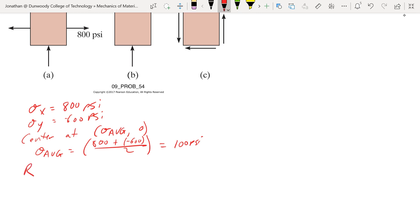R is going to be our radius. In this scenario, it's going to be the distance from either of these since we don't have any shear in this point. So R is going to be 800 minus 100, 700 psi.